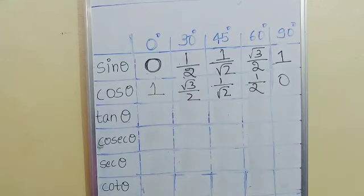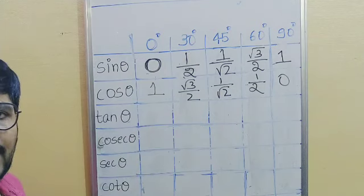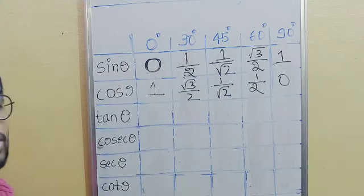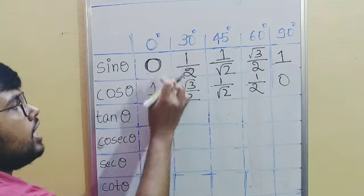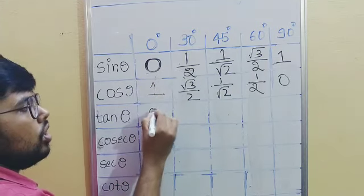Next, tan. We know tan is equal to the ratio of sine by cos. So just divide sine and cos. Zero by one is zero. When you divide this and this, the denominator is same, it gets cancelled off, will remain with one by root